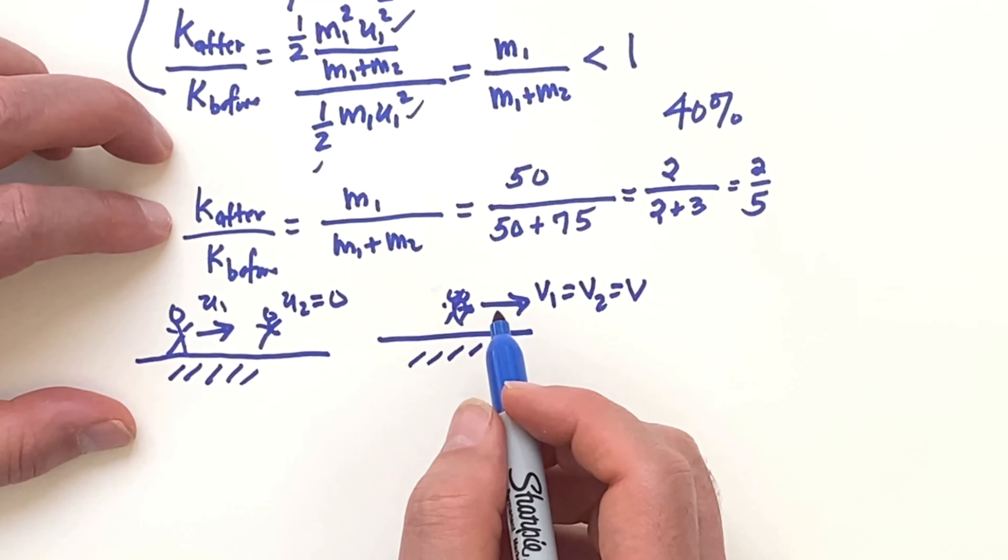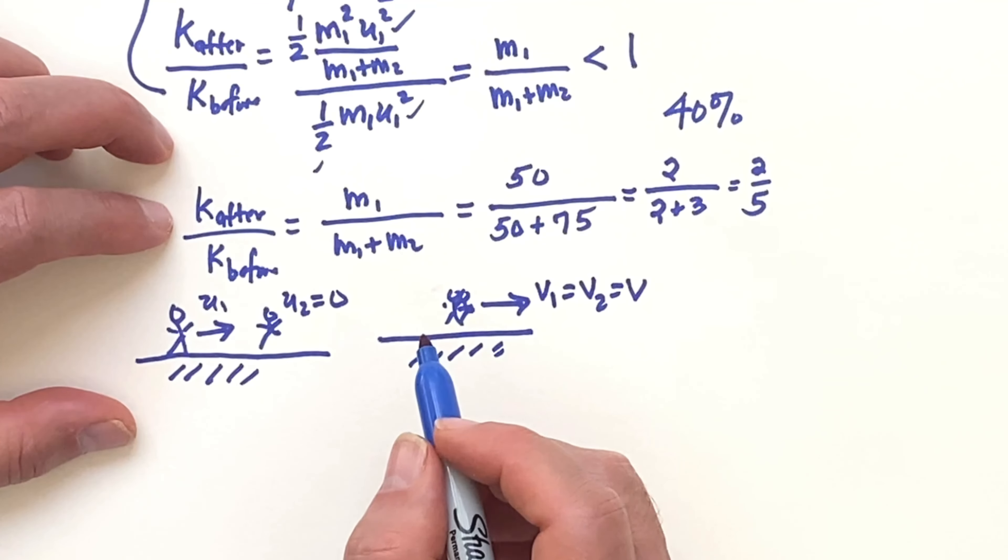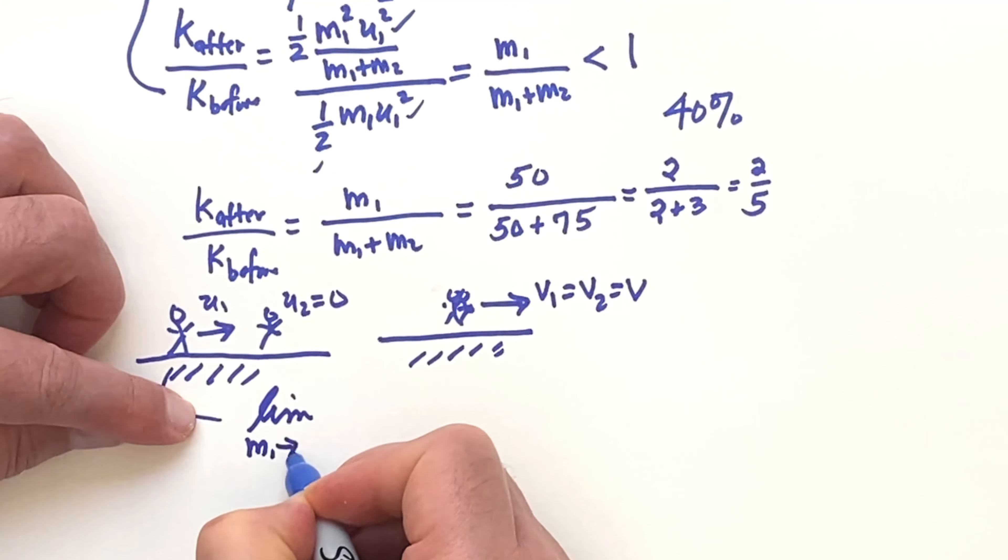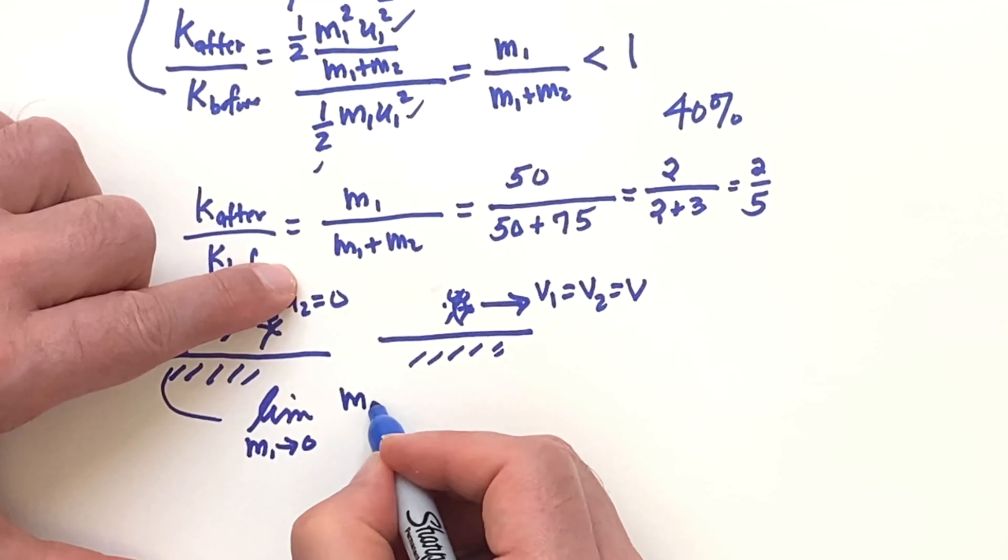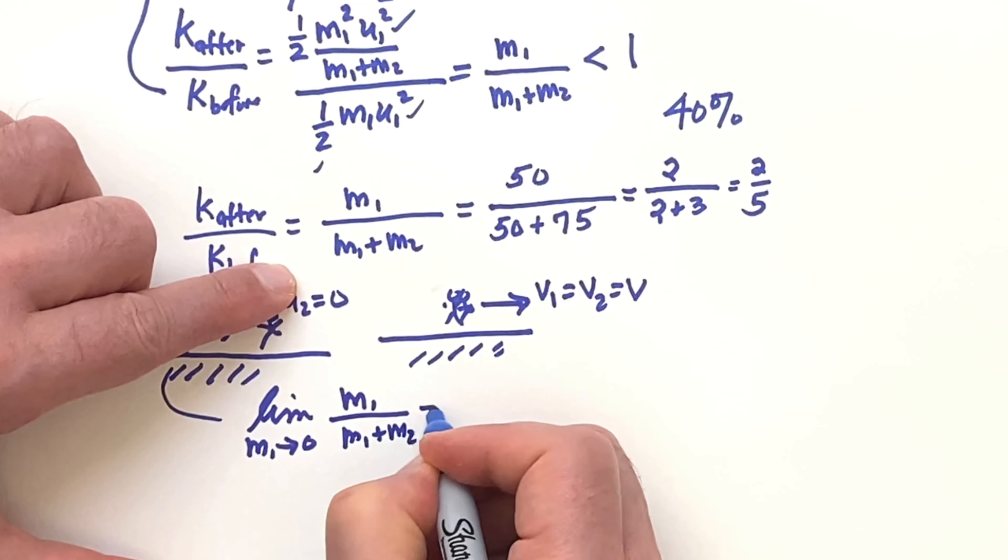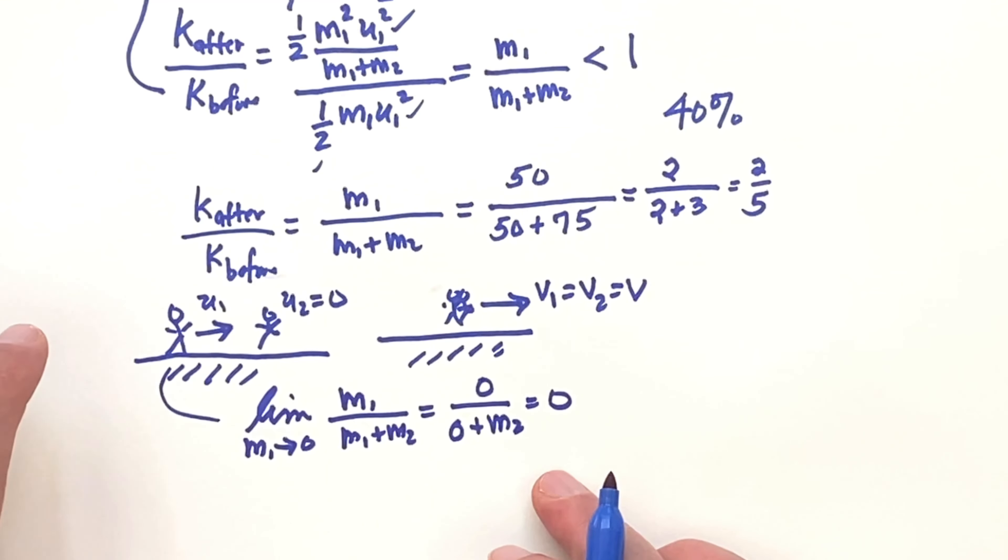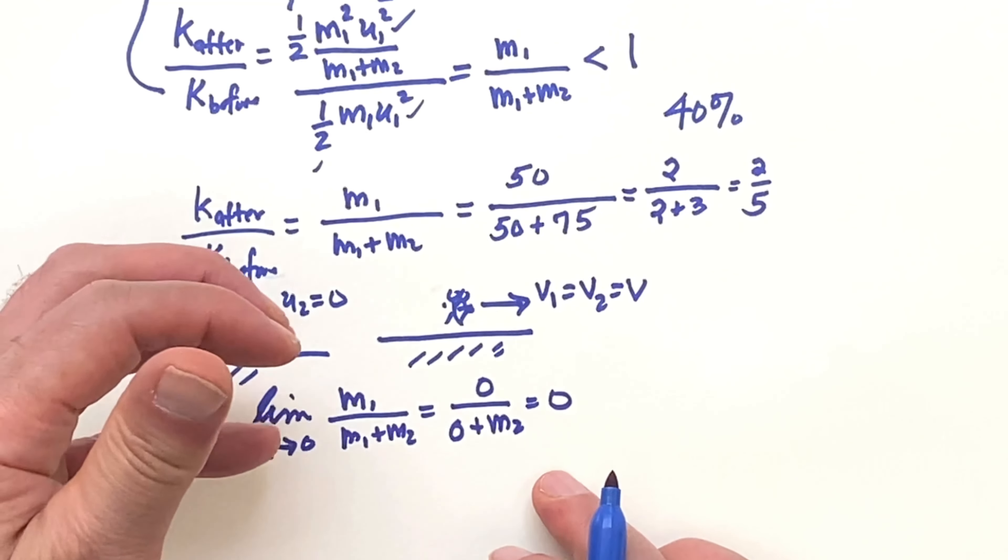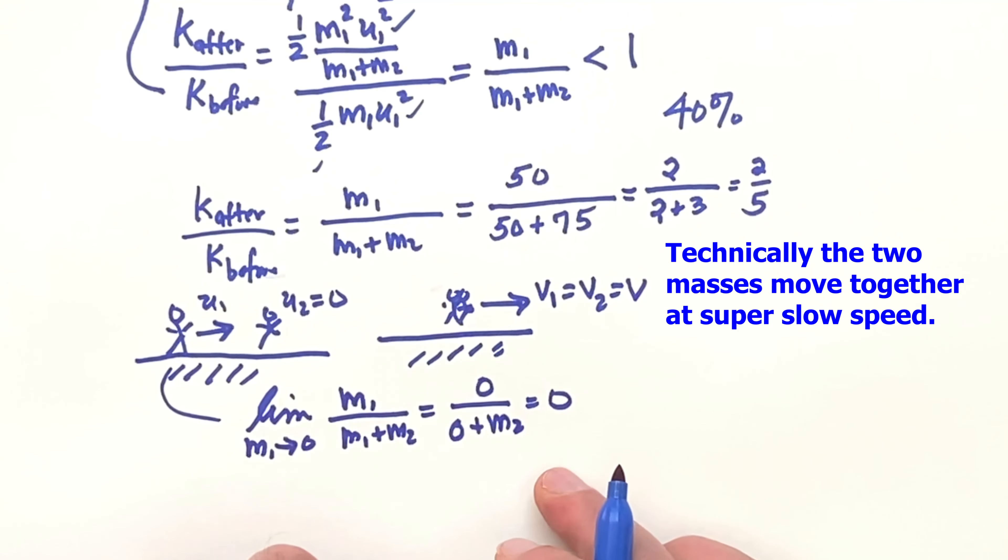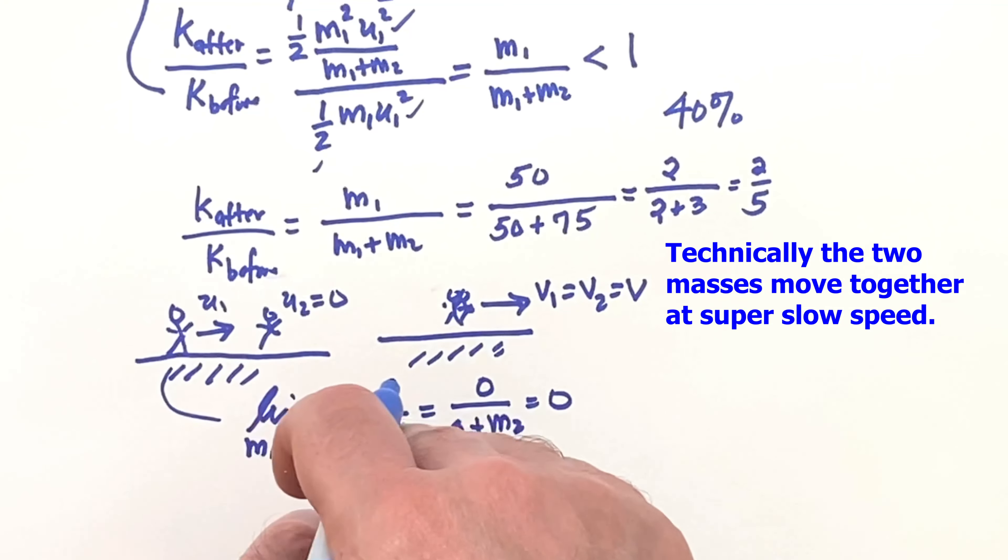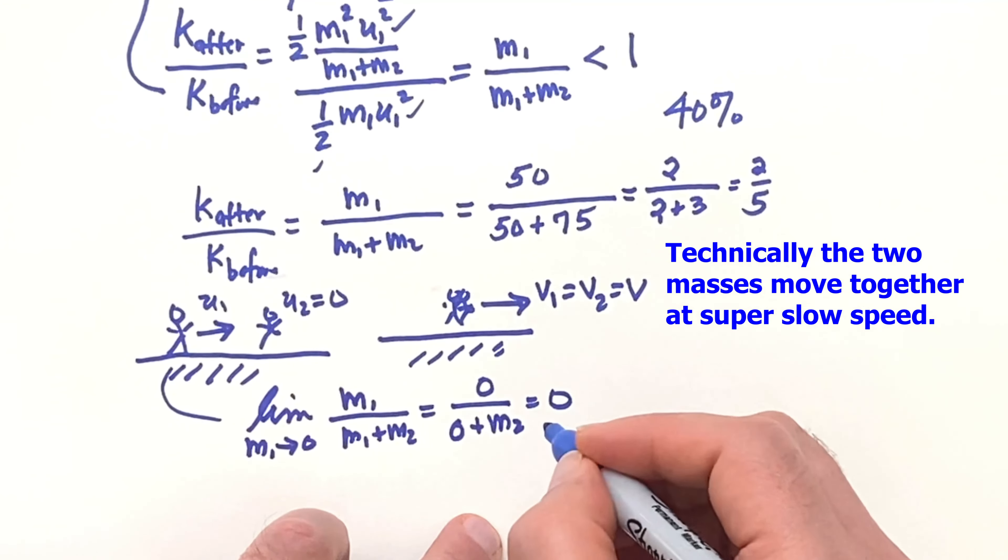So suppose that the first mass here is very, very small. In other words, we take the limit as the first mass goes to 0 of this ratio. Well, if the first mass goes to 0, you're going to get 0 over 0 plus M2, which is 0. So that means if the first mass is very, very small, that when it connects up with the other mass it's going to stop and the second mass is just too massive, it's not going to budge at all. Like if you imagine a fly flying into the other person, just land on the other person, the other person doesn't move and the fly comes to rest.